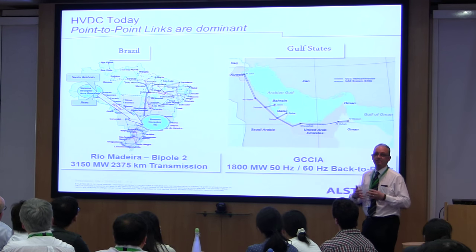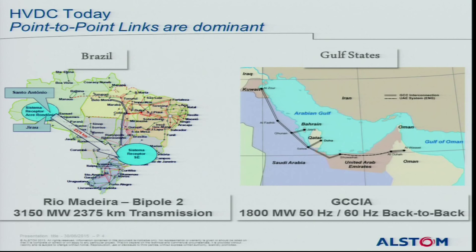There are two basic forms of HVDC. First, point-to-point transmission — a particularly long scheme at nearly 2,400 kilometres — where you've got a large source of power generation and want to move it in bulk to where your load is over a large distance. HVDC frequently works out to be the most economic way of doing that transfer.